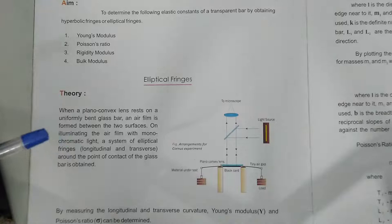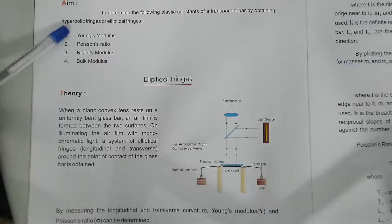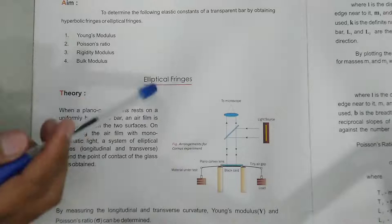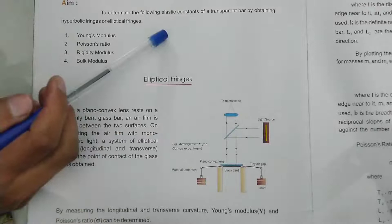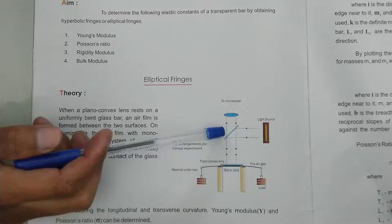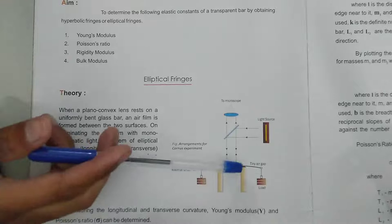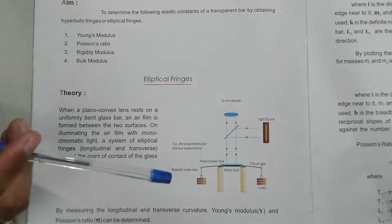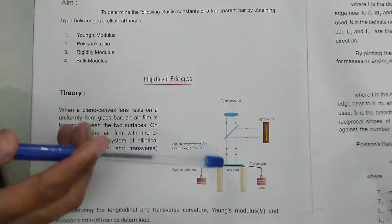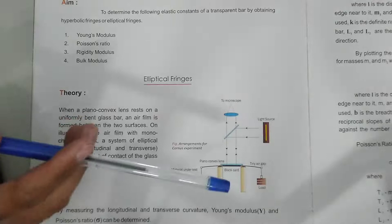This experiment is called Burner's method to determine the elastic constant of a transparent bar by obtaining hyperbolic or elliptical fringes. For elliptical fringes, the arrangement uses a sodium light source and a transparent glass slab to reflect rays. The transparent bar has load added on two parts, and on top we place a transparent plano-convex lens, which produces elliptical fringes.